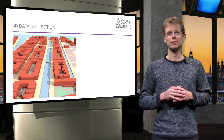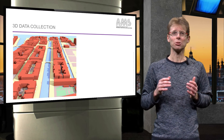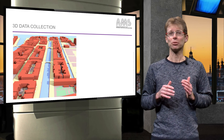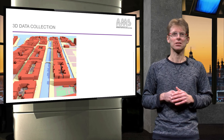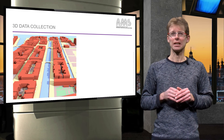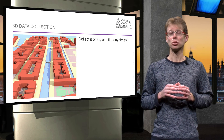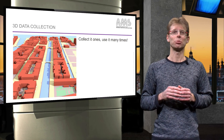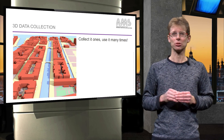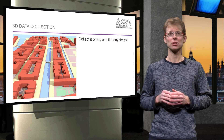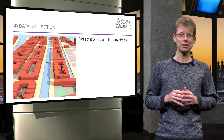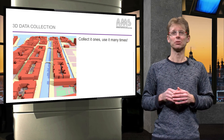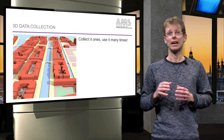Using 3D data for sustainable urban development also poses challenges to a 3D data infrastructure and its data providers. These challenges can be summarized as: collect it once, use it many times. What it means is that it is important to operate as efficiently as possible, for instance by making sure the same data isn't collected twice. This requires communication and cooperation among government agencies, citizens and the market.